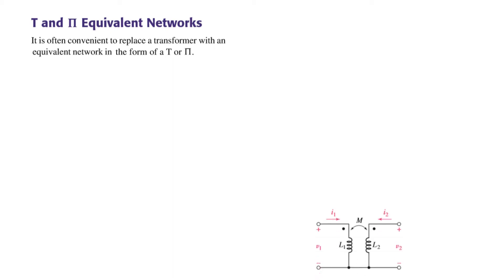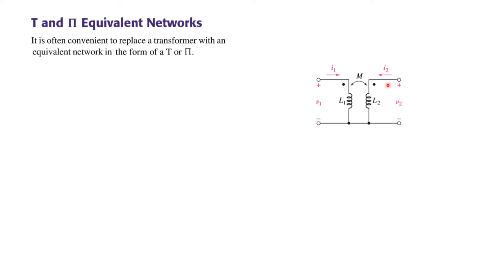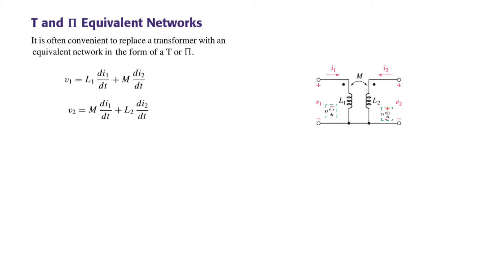This was the circuit we solved earlier. To find the voltages V1 and V2, we had to take care of the induced voltages — first marking their polarities and then accounting for them in the network. This was slightly cumbersome. In this case, V1 was given by L·di1/dt plus M·di2/dt, and similarly we had a corresponding equation for V2.